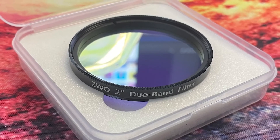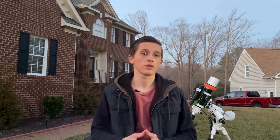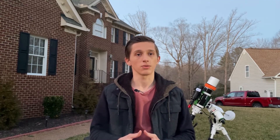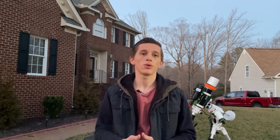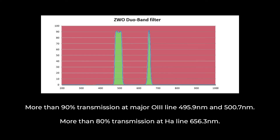ZWO Duo Band Filter, as it says in the name, is a dual narrowband filter dedicated to be used with color cameras. It cuts down most of the visible spectrum and passes light just at two wavelengths called Hydrogen Alpha and Oxygen 3. This filter is really good for capturing deep sky objects such as emission nebulae. It improves contrast and visibility of those objects because it reduces artificial light pollution from city lights, and ZWO's website says it can also reduce natural light pollution such as moonlight. On the screen you can see the transmission curve of this filter — it passes just the specific wavelengths at Hydrogen Alpha and Oxygen 3 and blocks the rest of the visible spectrum.